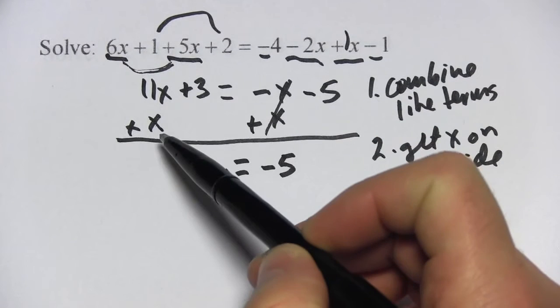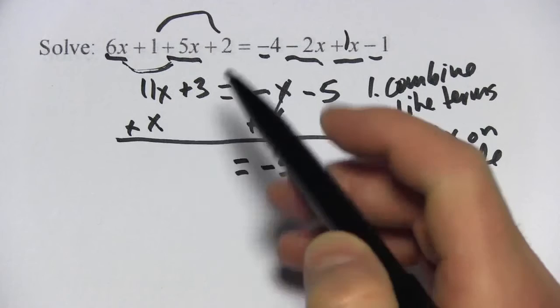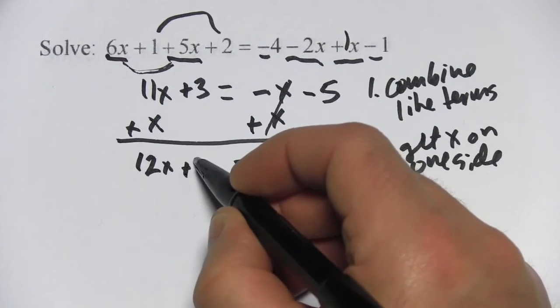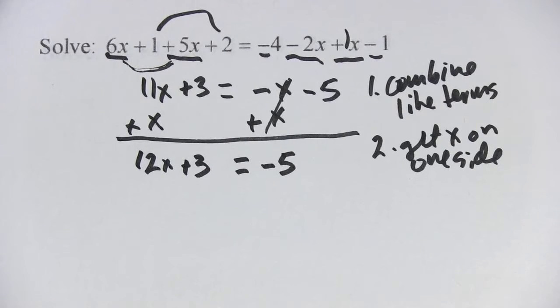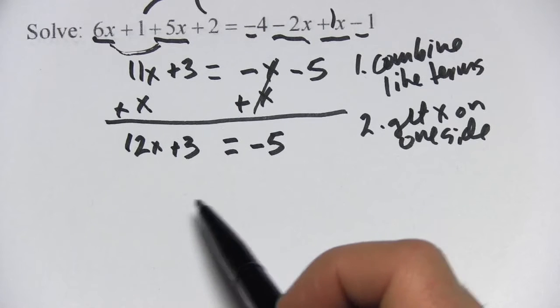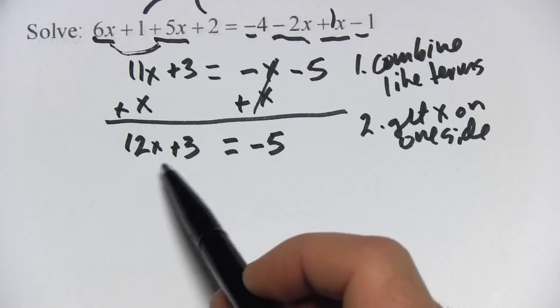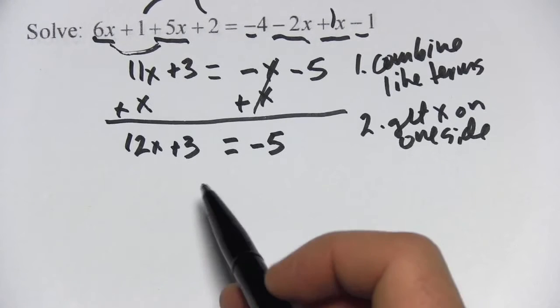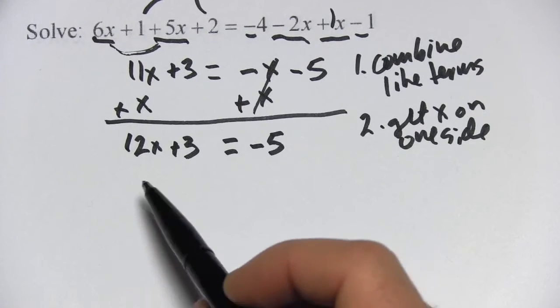Over here, I have 11x plus 1x, that is 12x, and then I have my plus 3. Now I've got that typical situation where I have my x term and then I have some other number hanging out here. I want to get rid of that other number first before I do the division.